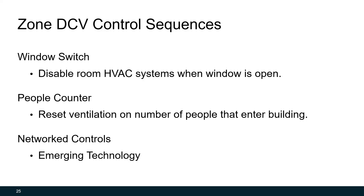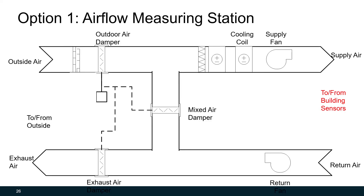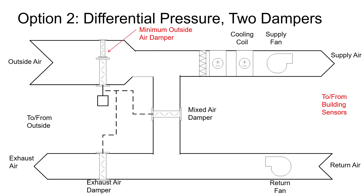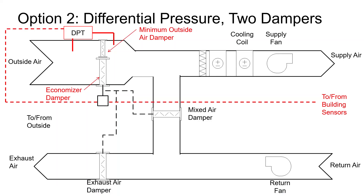We can integrate all of that into our overall DCV control system. At the air handling unit, we want to either use the airflow measuring station to reset outdoor air — resetting it based on all building sensors or the most critical zone — or put in two dampers, one for minimum outside air and one for economizer, based on our differential pressure transmitter, and again reset our set point based on all the zone sensors, either through polling or the most critical zone.